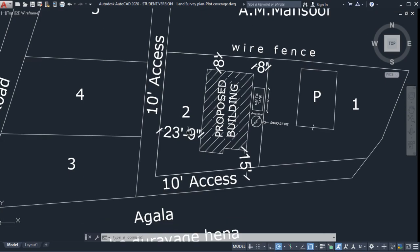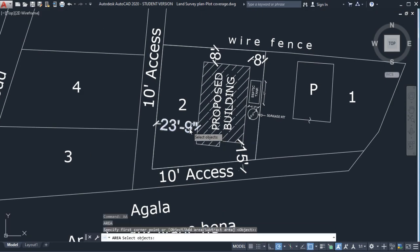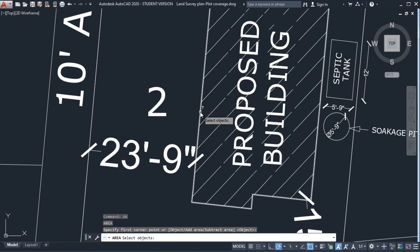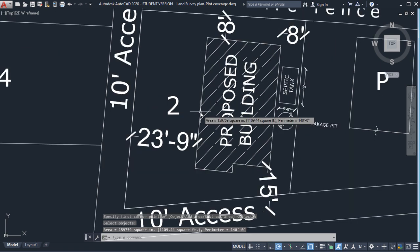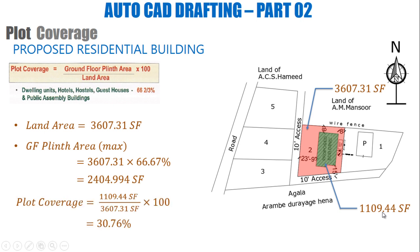Let's check this with the CAD file. Here I'll find the area of the proposed building — that says 1,109.44 square feet. We'll highlight the plinth area: it is 1,109.44 square feet.